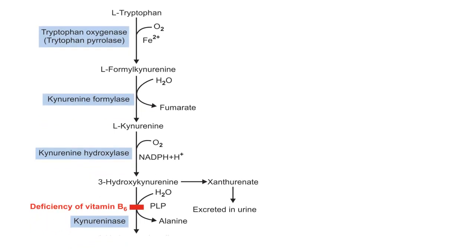The first step in the kynurenine pathway is that tryptophan gets oxidized to L-formyl kynurenine with the help of tryptophan oxygenase enzyme, also known as tryptophan pyrolase. After that, the formyl group is removed from L-formyl kynurenine with the help of kynurenine formalase enzyme, converting it to L-kynurenine.